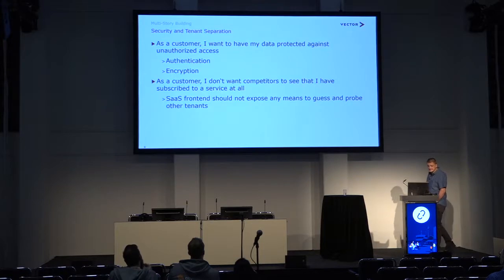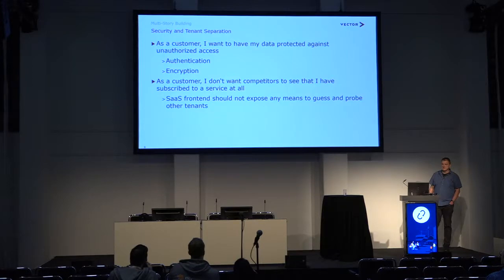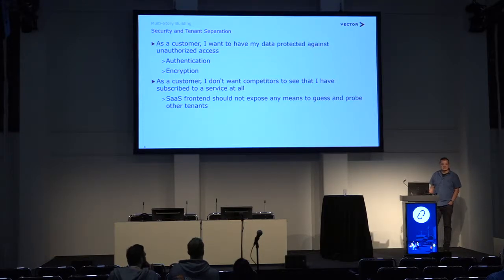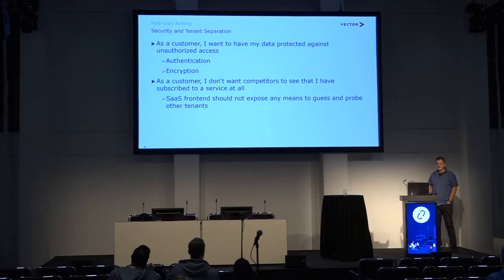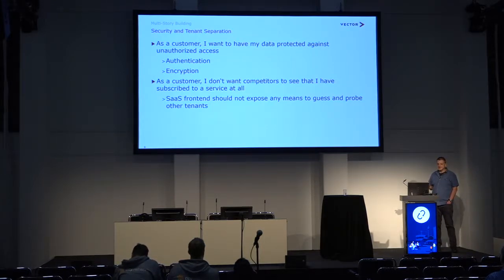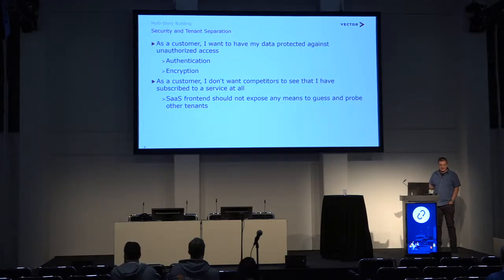We need to consider security and tenant separation. Our industry is quite risk-averse and competitive. As a customer, I always want my data protected against any unauthorized access — the usual responses being authentication and encryption of data in transit. But also, as a customer, I don't want any competitor to see that I've subscribed to a certain service at all, because doing so would allow a competitor to draw conclusions about what I'm doing during car development. That means our SaaS front should not expose any means to guess or probe for other tenants — it must not be possible to check whether a competitor is using the Vector cloud by doing a DNS lookup, for example.